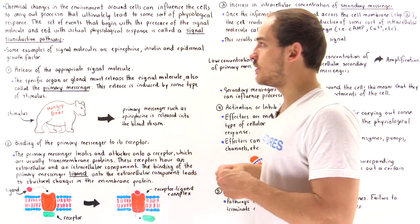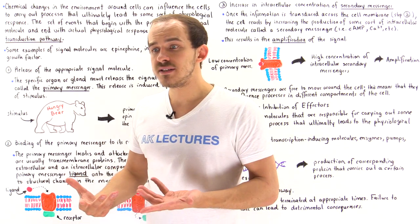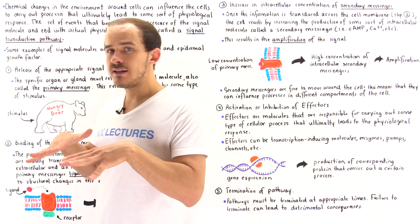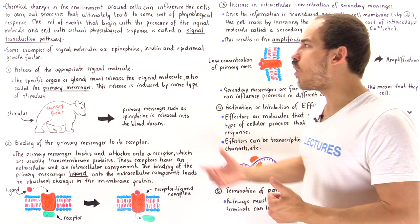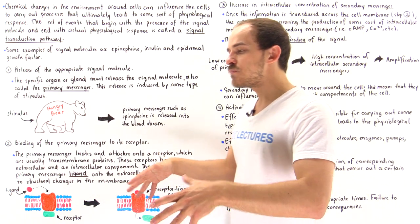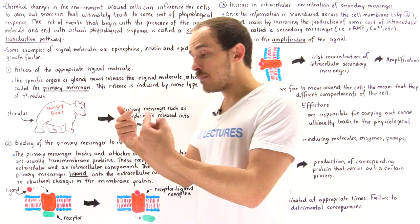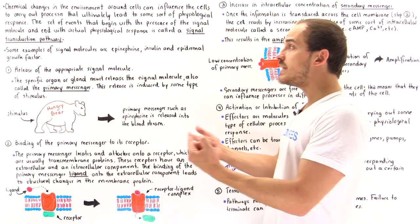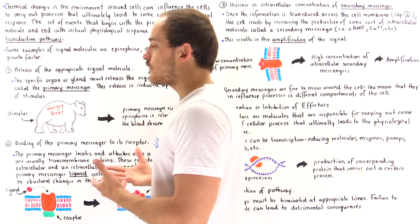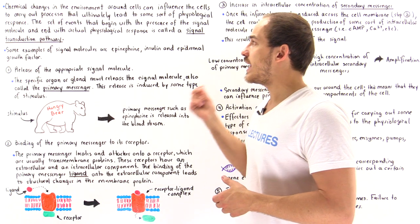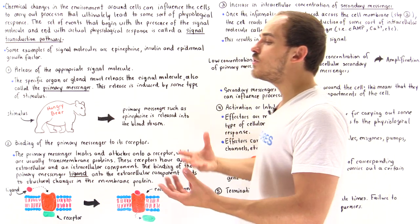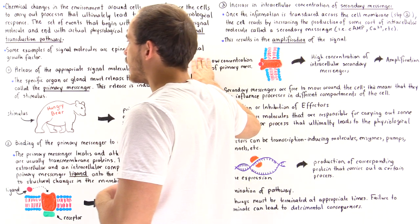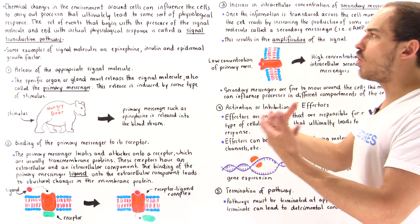Going back to our bear example: when we see that bear and panic and begin running, the endocrine system — and more specifically the adrenal gland found on top of the kidneys — begins producing a signal molecule we call epinephrine. Epinephrine diffuses into the bloodstream, goes around the cells, the concentration of epinephrine around the cells increases, and that ultimately influences the cells to carry out specific processes leading to running away. Epinephrine is not the only example; two others we'll study in detail are insulin and epidermal growth factor, and other hormones also serve as these signal molecules.